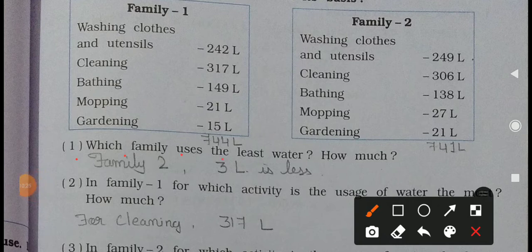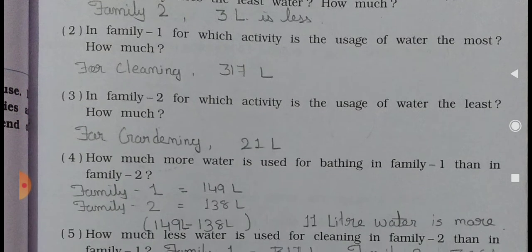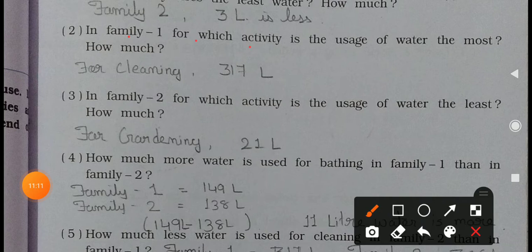First number: Which of the family uses the least water? How much? After you do the addition you will count 744 liter Family 1, 741 liter Family 2. So which one is the least? Family 2 has given the least. Family 2 is the least, 3 liter less, because 744 subtract with 741. So 3 liter is less than Family 1. Family 2 is less than Family 1. Second number: In Family 1, for which activity is the water usage the most and how much? For cleaning they are using the more water, 317 liter.